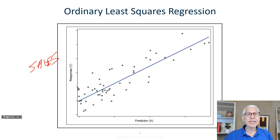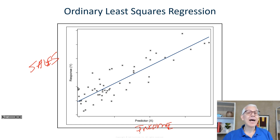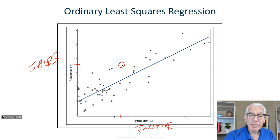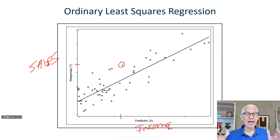So we have sales on one axis and then my predictor variable — in this case, maybe income — the income of all of our customers. We have different customers, they're going to have different incomes. And what we have here is a scatter plot. You see all the little dots along this scatter plot — those are the actual values. So there's a customer with a certain amount of income, and we can see that in the past they've had this amount of sales. These points are really just a sample of our true population. What we want to do is find the line that best goes through this data.